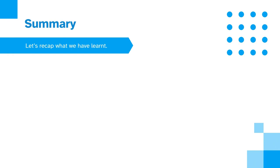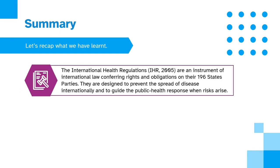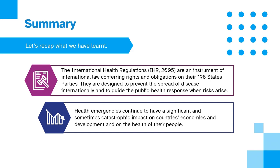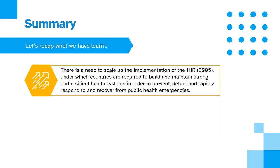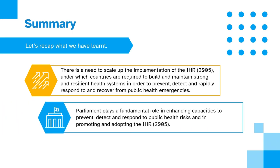Let's recap what we have learnt. The International Health Regulations are an instrument of international law, conferring rights and obligations on their 196 states parties. They are designed to prevent the spread of disease internationally and to guide the public health response when risks arise. Health emergencies continue to have a significant and sometimes catastrophic impact on countries' economies and development and on the health of their people. There is a need to scale up the implementation of the IHR, under which countries are required to build and maintain strong and resilient health systems in order to prevent, detect and rapidly respond to and recover from public health emergencies. Parliament plays a fundamental role in enhancing capacities to prevent, detect and respond to public health risks and in promoting and adopting the IHR.